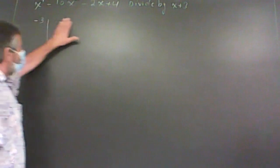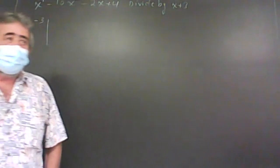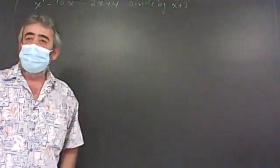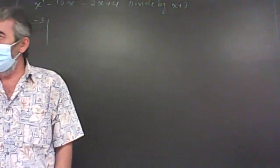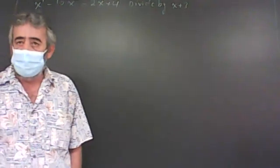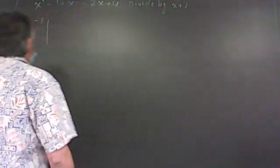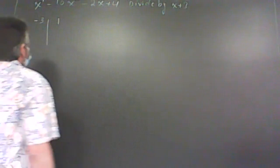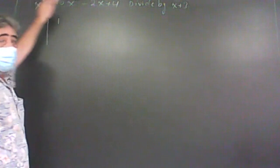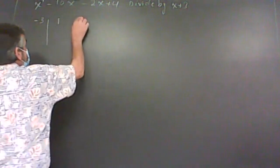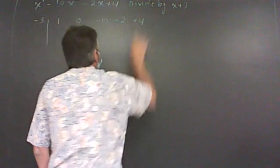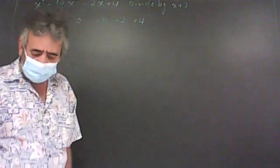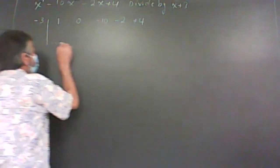Now we need to set up the coefficients of all the terms, going in order from the highest to the constant without skipping any. If there is any variable such as x cubed or x squared that doesn't exist in the polynomial, we write it as 0. So here, x to the 4 has coefficient 1. After x to the 4 should come x cubed — we don't have any x cubed, so I put 0. Then we have negative 10 for x squared, negative 2 for x, and the constant is plus 4.